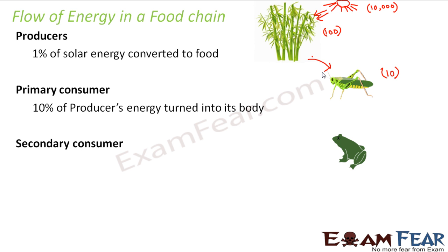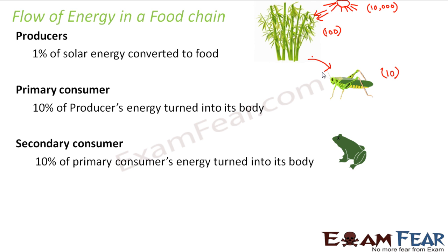Now similarly, when the secondary consumer — that is the frog — will consume the grasshopper, the similar thing will happen. So much energy will get spent in the digestion process as well as metabolic processes, and some energy will be lost as heat. So in this case also, only 10% of the primary consumer's energy will turn into the body of the secondary consumer. So 10% of 10 units is just 1 unit of energy.